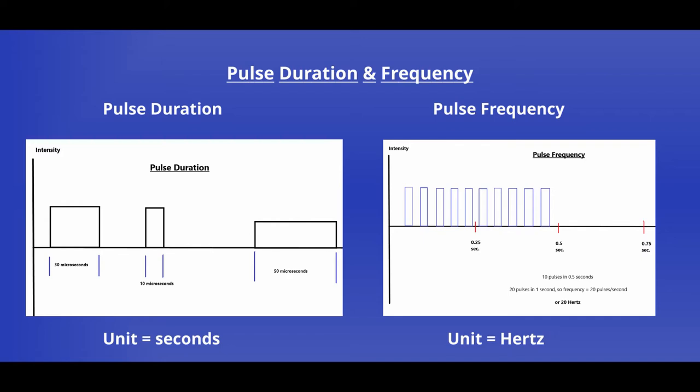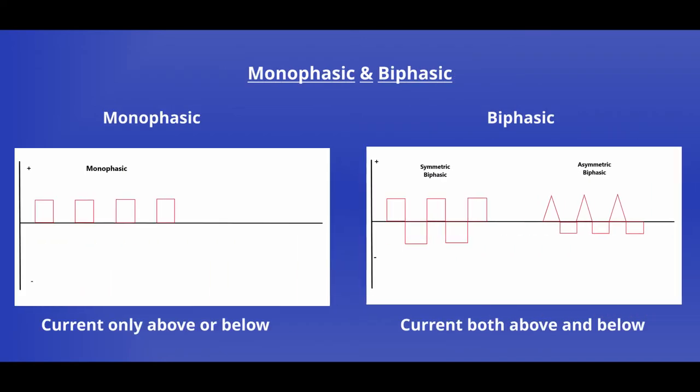It's also important to understand how many pulses per second we have occurring. When using alternating current, we can choose to do monophasic or biphasic. With a monophasic current, we only allow electrons to flow in one direction, so it behaves like direct current. With biphasic, current flows both ways. If we have equal current flowing both directions, we refer to this as symmetric biphasic. Sometimes, however, it's beneficial to unbalance that current flow. We refer to this as asymmetric biphasic.